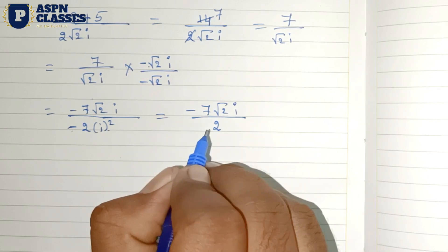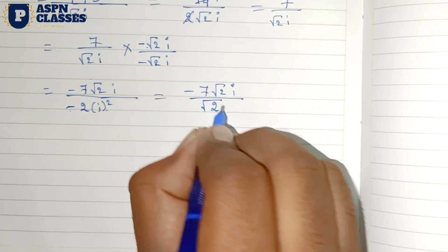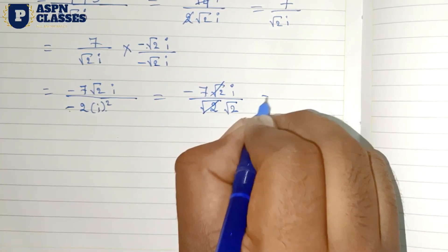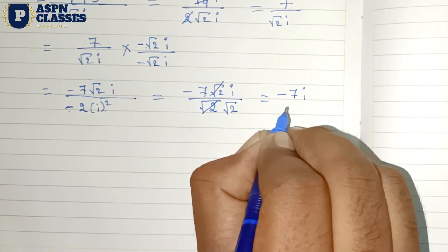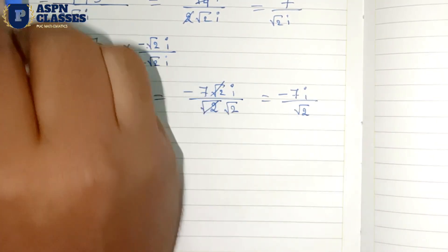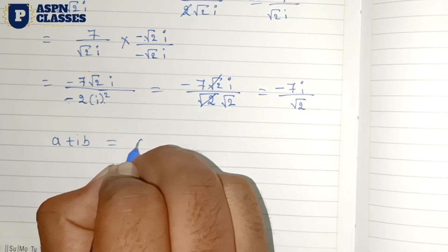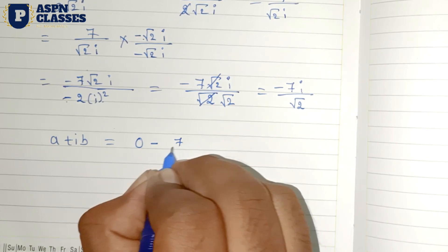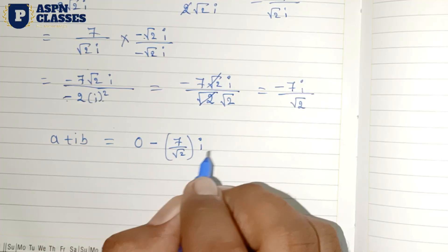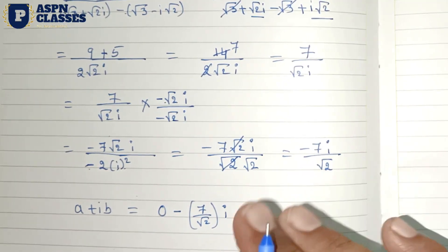So the last answer: after √2 cancels, the answer is minus 7i divided by √2. In the a plus ib formula, the real part a is 0, and the imaginary part b is minus 7 divided by √2 times i. This is the final answer. Thank you friends, we will see you in the next video.